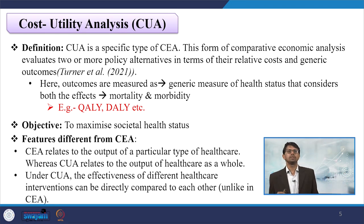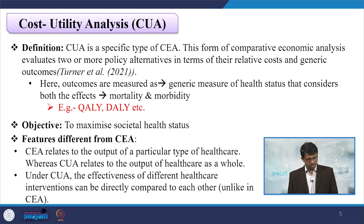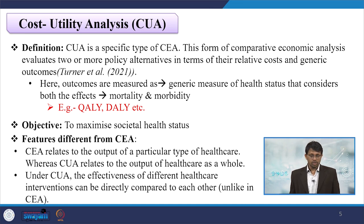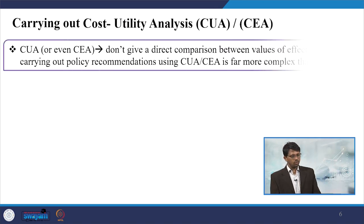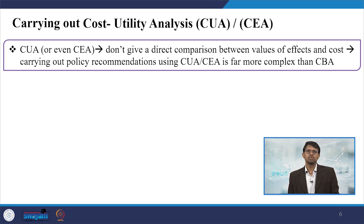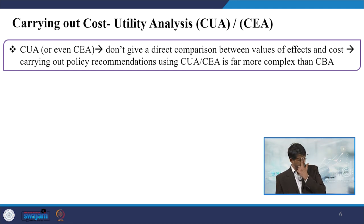How is CUA different from cost-effectiveness analysis? CEA relates to the output of a particular type of healthcare, whereas utility analysis refers to the output of healthcare as a whole. Under CUA, the effectiveness of different healthcare interventions can be directly compared to each other, unlike in CEA. CUA or CEA do not give a direct comparison between values of effects or cost — carrying out policy recommendations using CUA or CEA is far more complex than the CBA measurement done earlier.